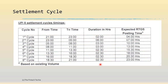Most of the cycles range from two to two-and-a-half hours, except the one from 11 PM to 5 AM, because obviously transactions are very few during that period. The last column shows the expected RTGS posting time for the settlement. Most of the time it is after about two hours from the end time of the cycle — for example, the end time is 9 PM and the RTGS posting time is around 11 PM, except for the first cycle which goes into late night.